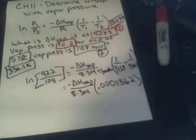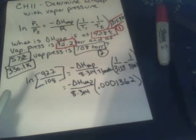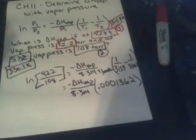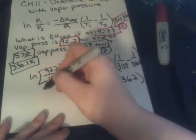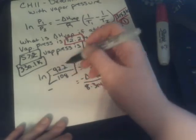And then, ln, so 92.2 divided by 108. I do not have a calculator. And the natural log of that is going to be negative 0.1582.